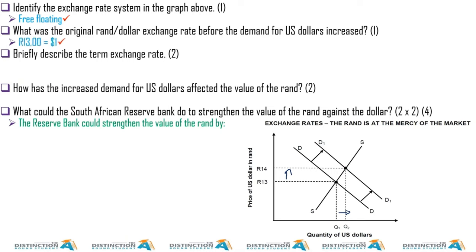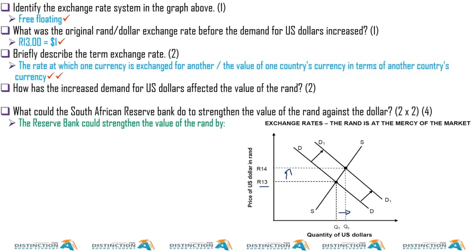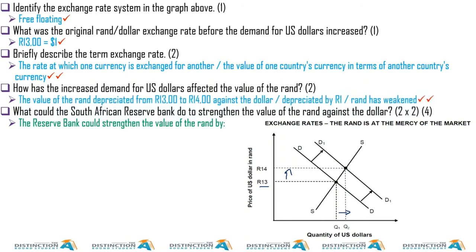Briefly describe the term 'exchange rate.' The exchange rate is the rate at which one currency can be exchanged for another — as simple as that. For example, rands to dollars, pounds to euro. How has the increased demand for US dollars affected the value of the rand? The rand has depreciated.